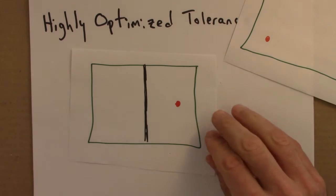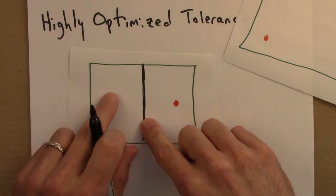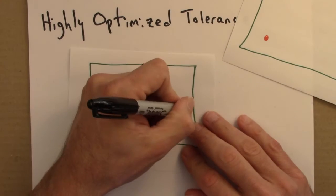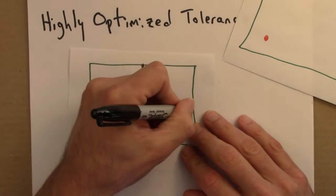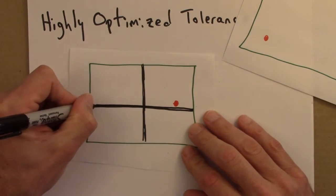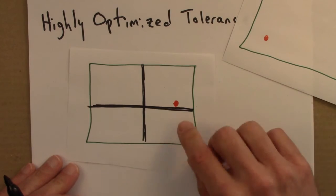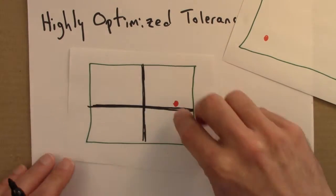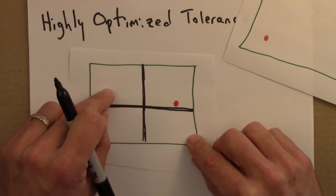So then you might think, alright, this fire break saved half the forest. What if I added another fire break here? Even better. Then if there's a spark here, boom, that burns. But these three quadrants don't.